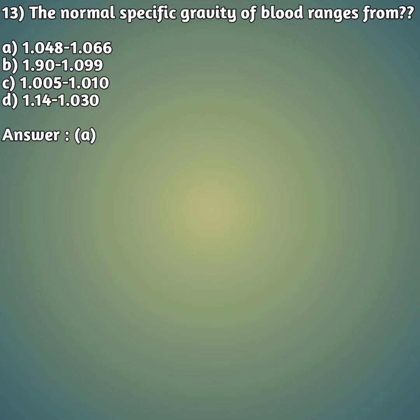Thirteenth question: the normal specific gravity of blood ranges from — option A: 1.048 to 1.066, option B: 1.90 to 1.099, option C: 1.005 to 1.010, option D: 1.14 to 1.030. The right answer is option A — 1.048 to 1.066 is the normal specific gravity of blood.